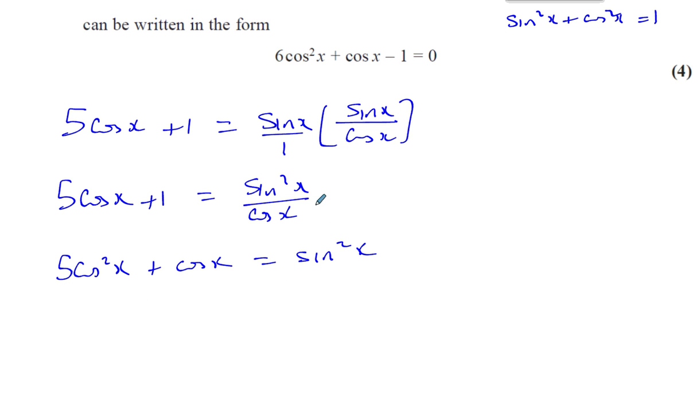We've got rid of the tangent. Now we've got cosine squareds, cosines, and sine squareds. Now we can use this identity here. If sine squared x plus cosine squared x equals 1, I can express sine squared x in terms of cosine squared x. I can say sine squared x is equal to 1 minus cosine squared x.